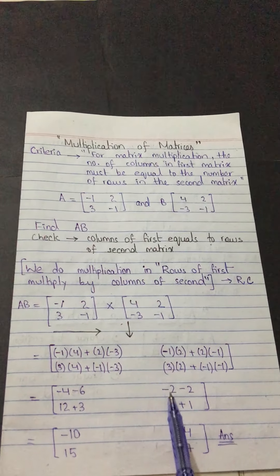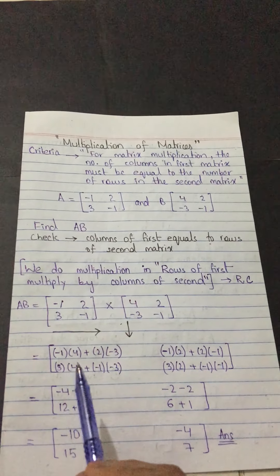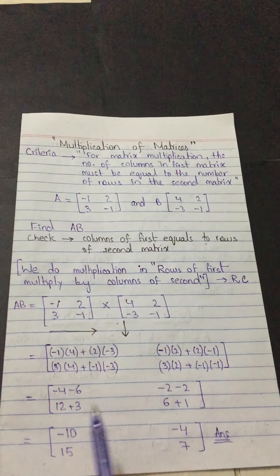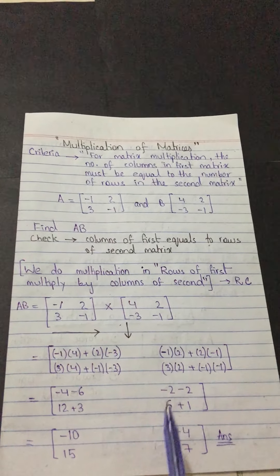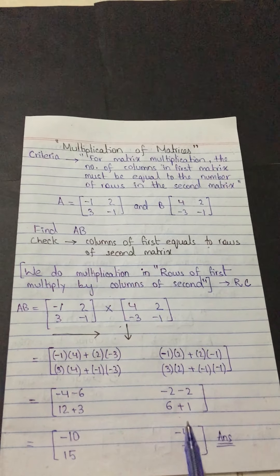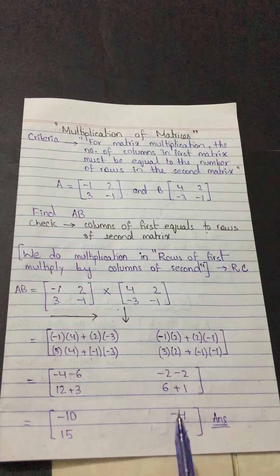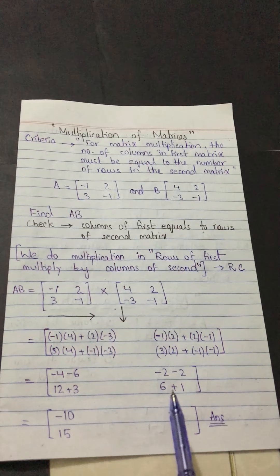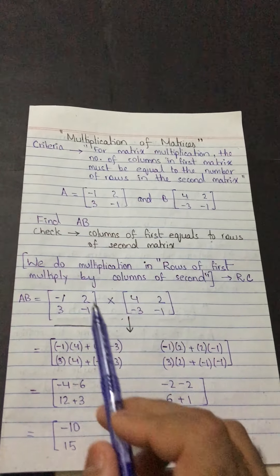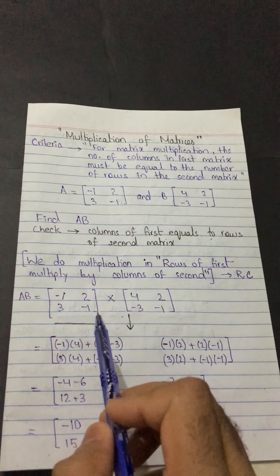Evaluating the results: first element — (−4) + (−6) = −10. Second element — (−2) + (−2) = −4. Third element — 12 + 3 = 15. Fourth element — 6 + 1 = 7. So the resulting matrix is [−10, −4; 15, 7].